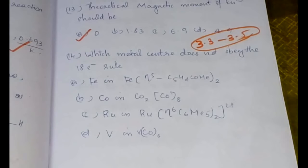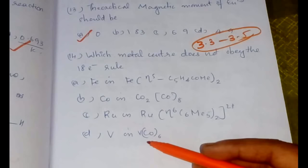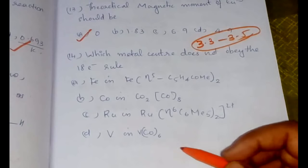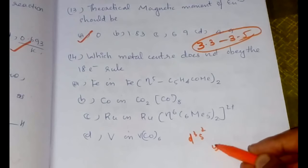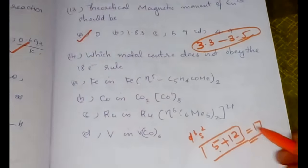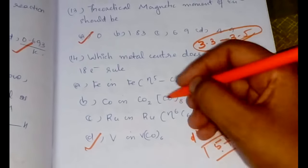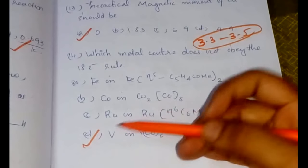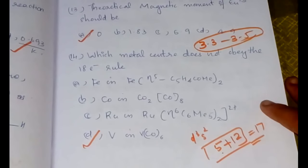The next question is: which metal center does not obey the 18-electron rule? You can see there are many difficult examples, so the best way that you could have approached this question was to check V(CO)6 in the first place, because vanadium, scandium, titanium, and vanadium should be d3 s2. That is 5 from vanadium and also 12 from carbonyl compound, so it will be having 17 electrons. V(CO)6 is definitely not an 18-electron complex.